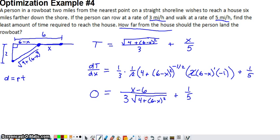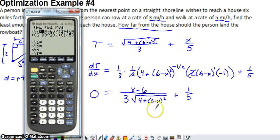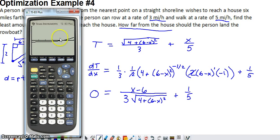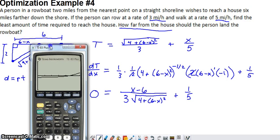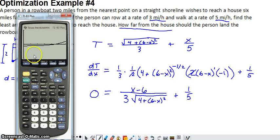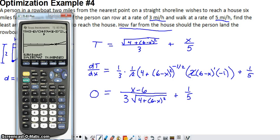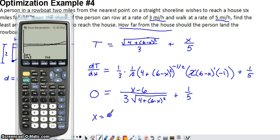Using a graphing calculator, I graph the derivative with x ranging from 0 to 6 (the relevant domain) and y from −1 to 1. The graph shows the derivative equals zero at one point. Using the calculate menu's zero feature, setting left and right bounds and a guess, the calculator gives an x value of 4.5. This could also be solved algebraically, but we chose the graphical approach to save time.